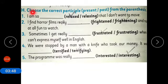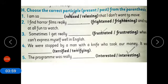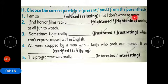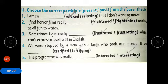Now coming to Exercise H: choose the correct participle — present or past — from the parentheses. Present participle is the first form plus -ing, and past participle is formed by adding -ed to the base form. First sentence: 'I am so dash that I don't want to move.' We will put past participle here — 'I am so relaxed.' So 'relaxed' is the correct option.